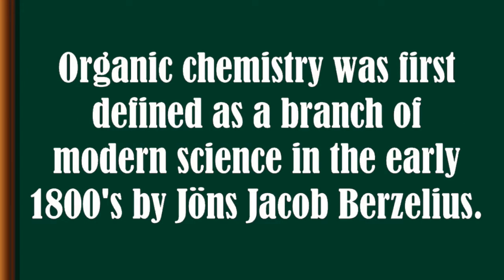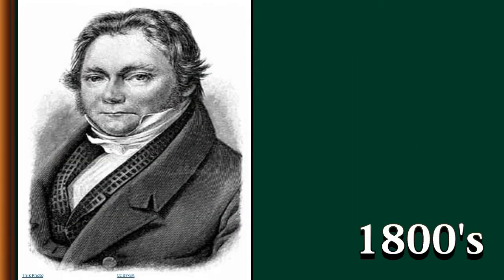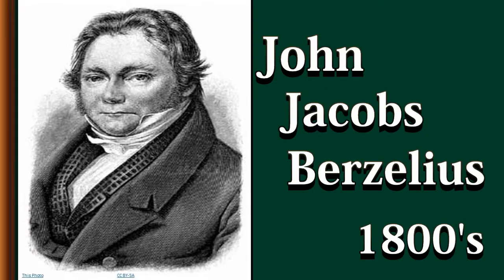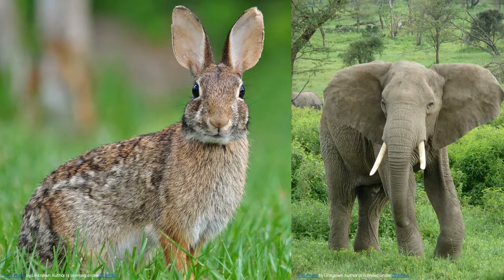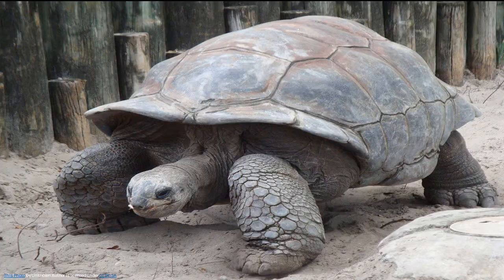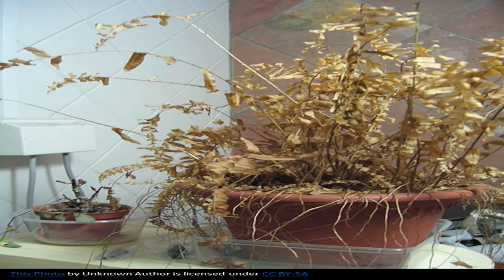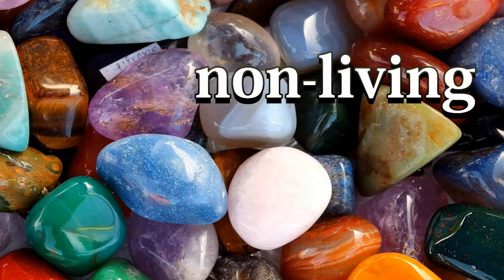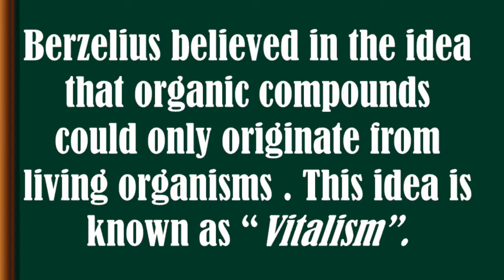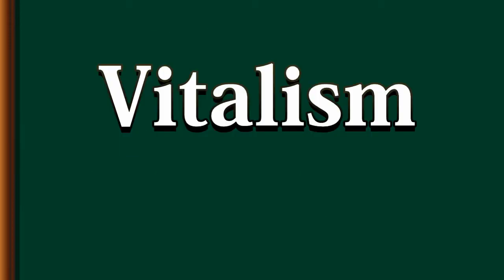Their knowledge formed the basis of modern pharmacology, which has a strong dependence on knowledge of organic chemistry. Organic chemistry was first defined as a branch of modern science in the early 1800s by John Jacob Berzelius. He classified chemical compounds into two main groups: organic, if they originated in living or once-living matter, and inorganic, if they came from mineral or non-living matter. Berzelius believed in the idea that organic compounds could only originate from living organisms — this idea is known as vitalism.